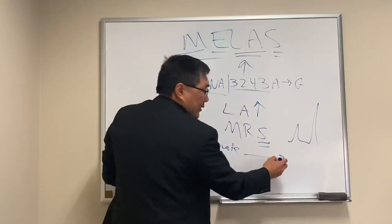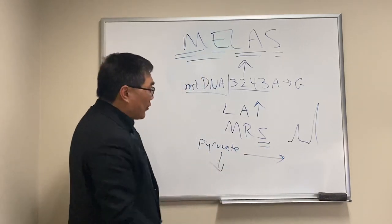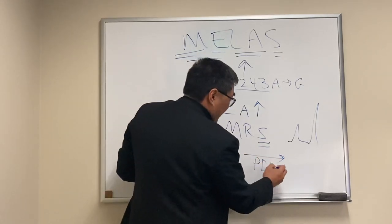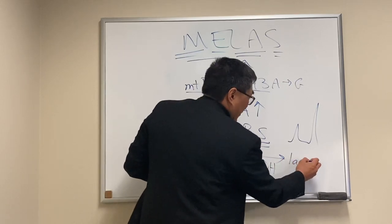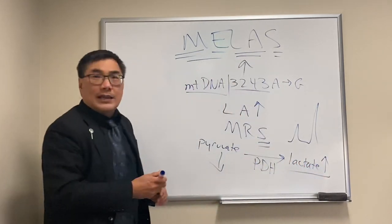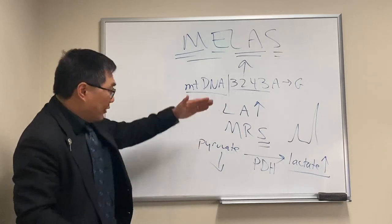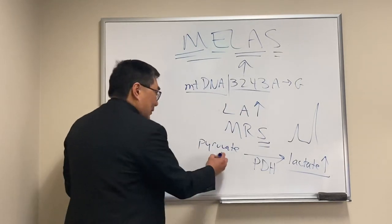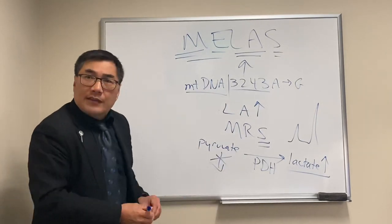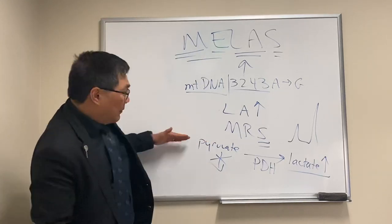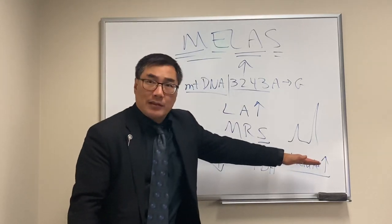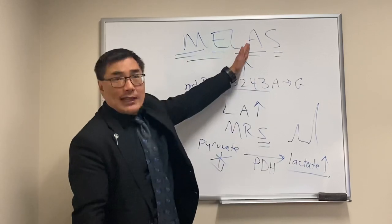is shunted over into the anaerobic pathway for pyruvate dehydrogenase, leading to lactate. So the LA in MELAS stands for lactic acidosis from the block in the mitochondrial function from pyruvate into the Krebs cycle, being shunted over to the anaerobic pathway and leads to the lactic acidosis.